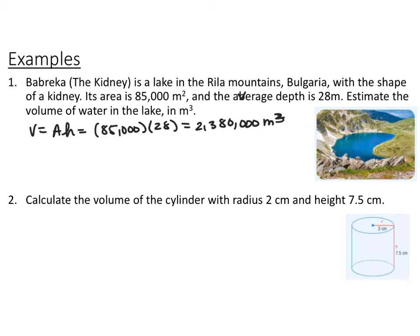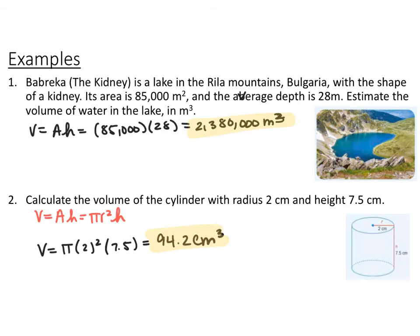For the next example, we have a cylinder with a radius of 2 centimeters and a height of 7.5 centimeters. The volume of a cylinder is the area of the base — the circle — times the height: pi r squared times h. With r equal to 2 and h equal to 7.5, you get pi times 4 times 7.5, which equals 94.2 cubic centimeters.